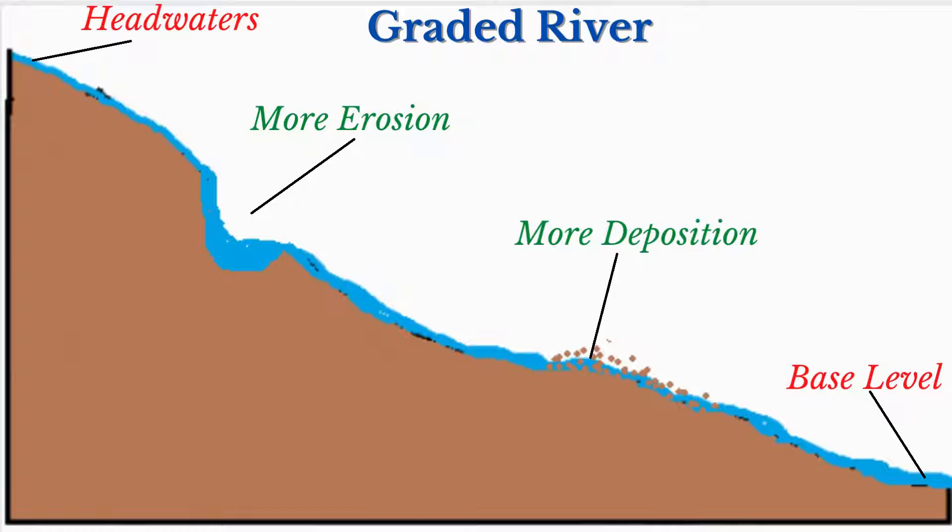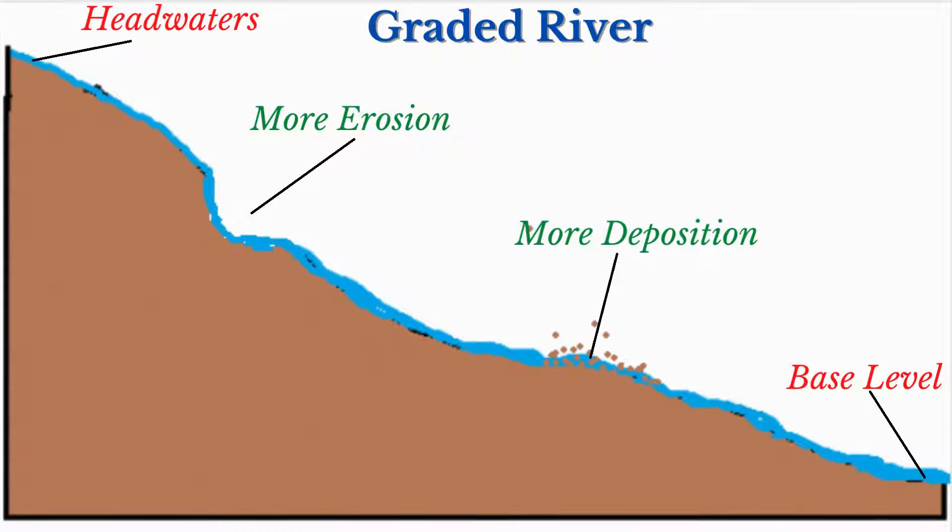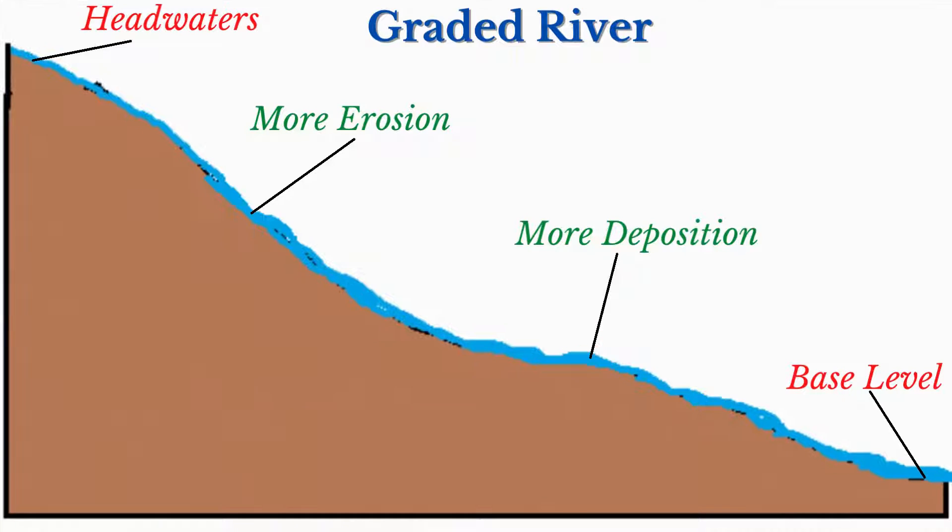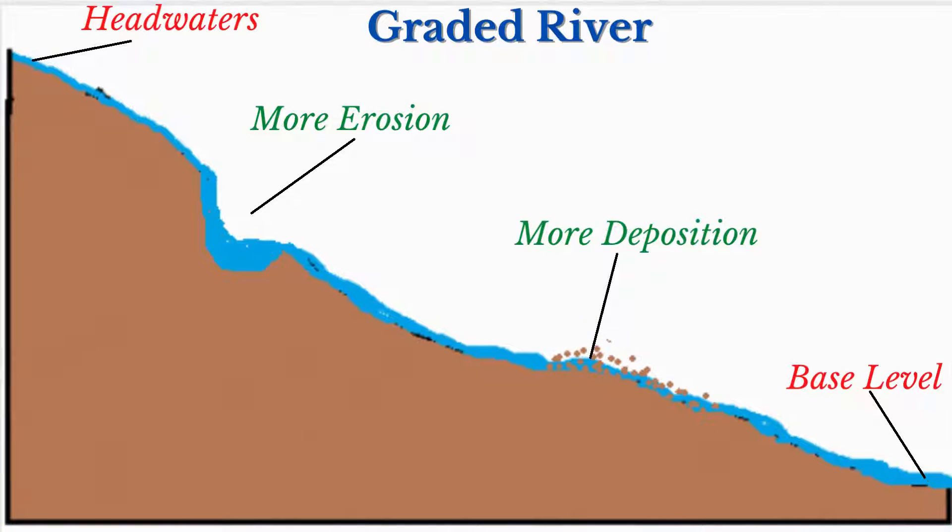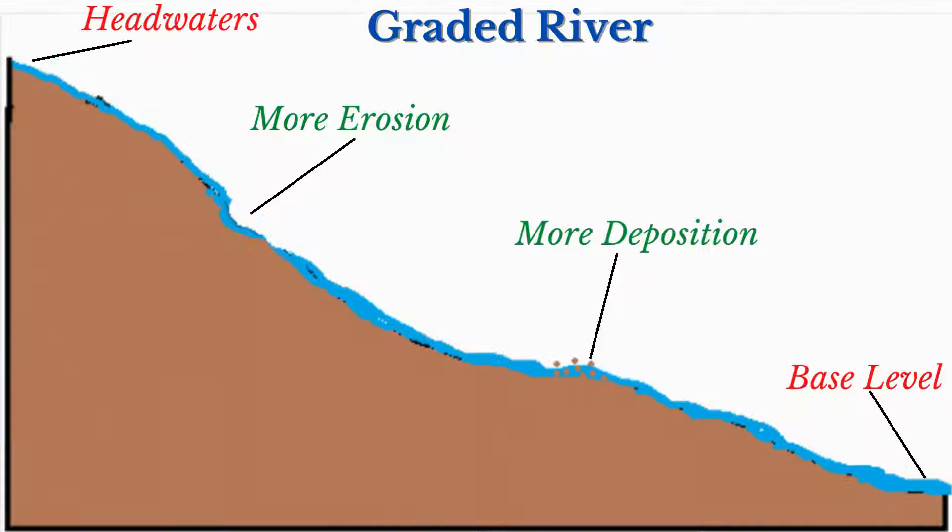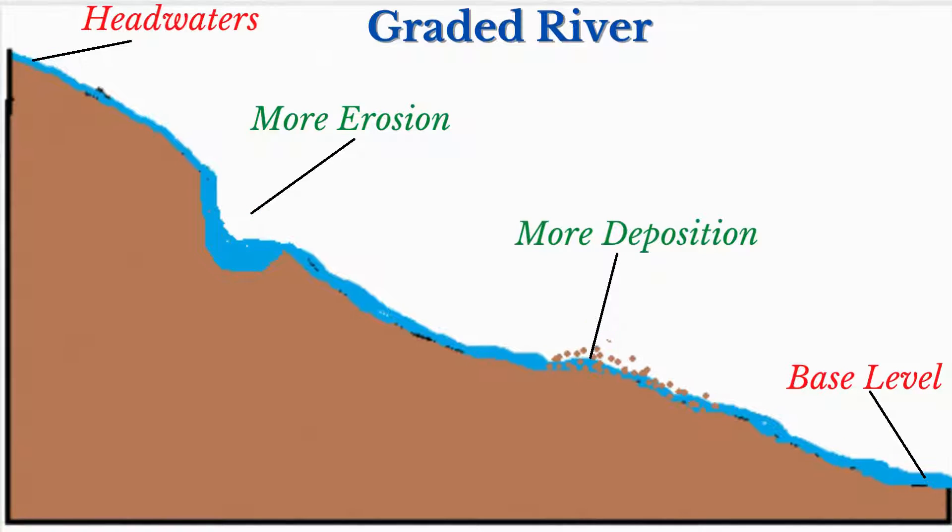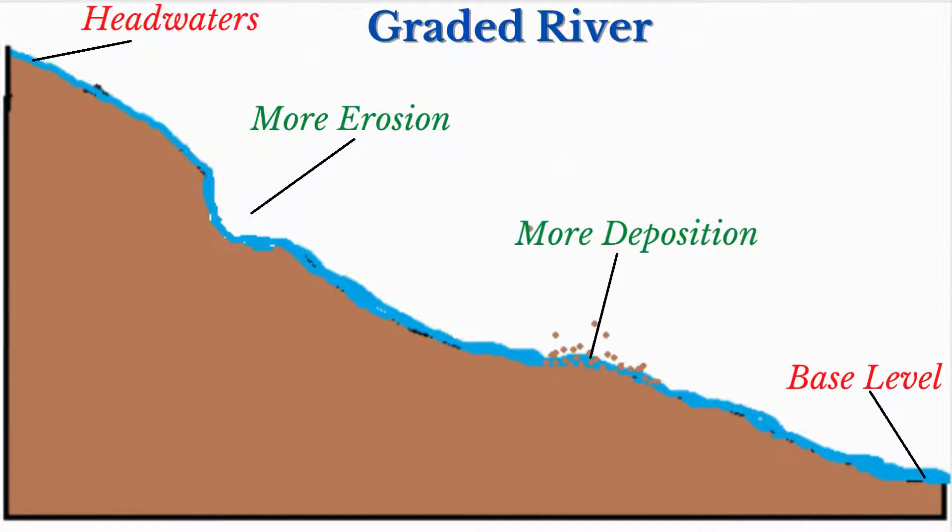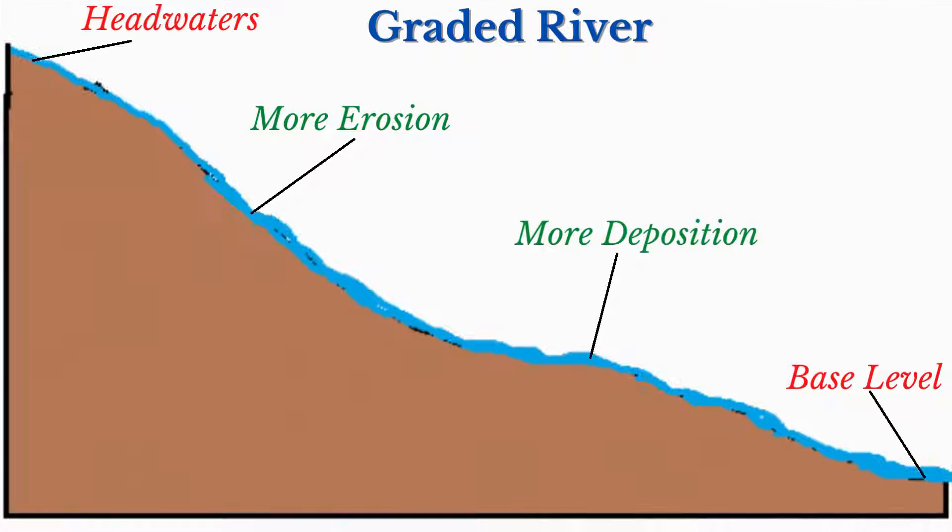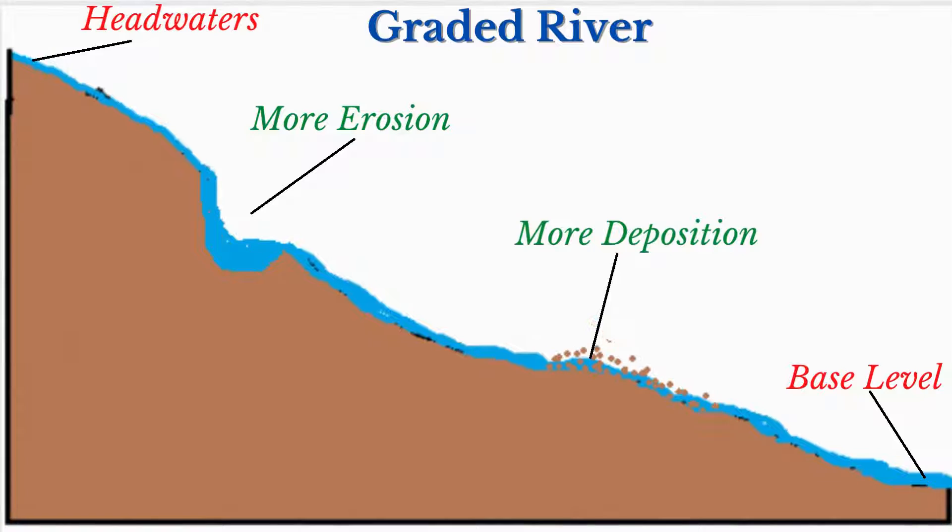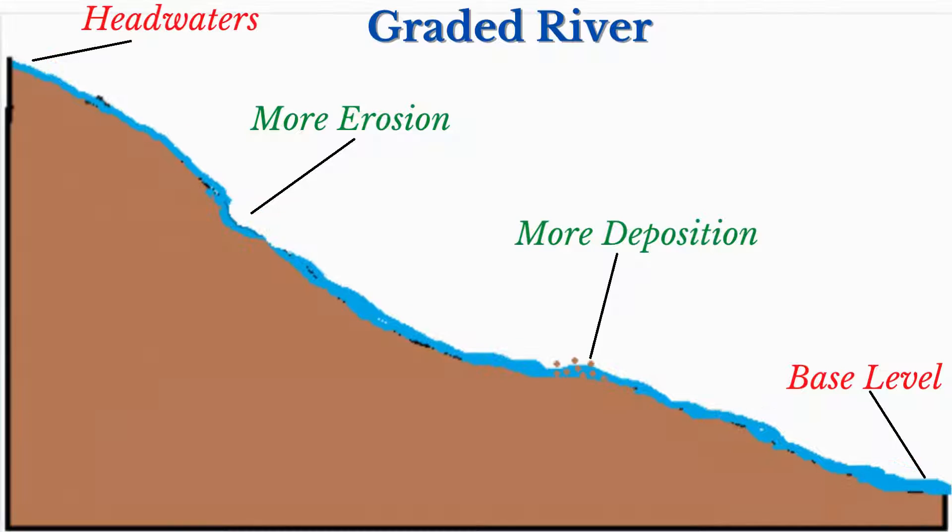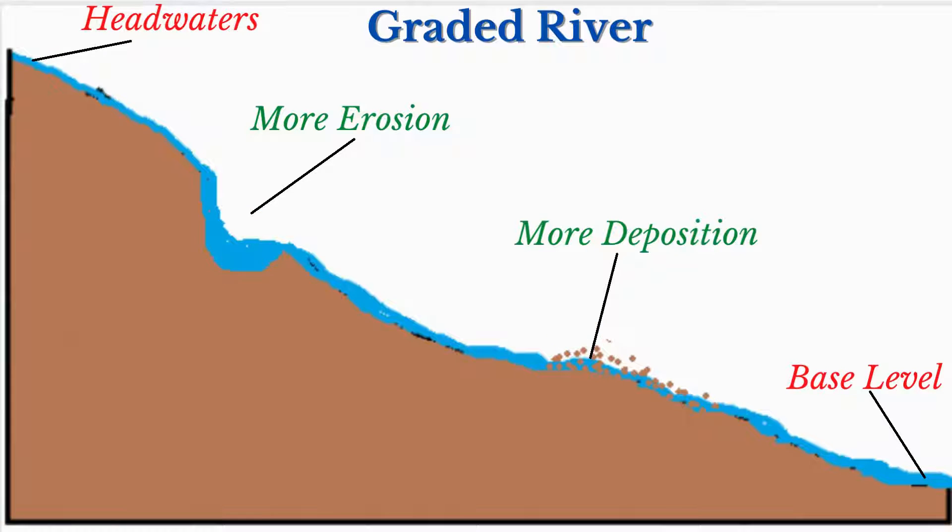The graded river has all aspects of its channel, including its width, depth and gradient, adjusted to the discharge and load of the river at a given point. Under this condition, the river has just the right combination of gradient and discharge needed to flow and carry sediments. However, if the volume and load change, then the river's channel morphology must adjust accordingly.